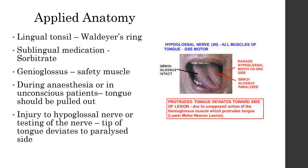The tip will deviate to the paralyzed side because the normal genioglossus will push the tip. The protruded tongue deviates towards the side of the lesion due to unopposed action of the genioglossus muscle, whose action is to protrude the tongue. This is seen if the hypoglossal nerve is damaged.